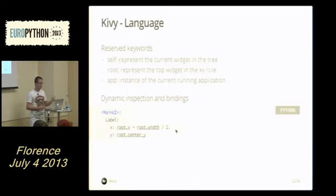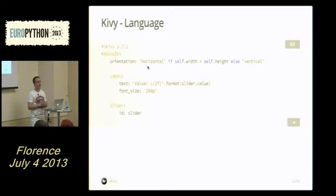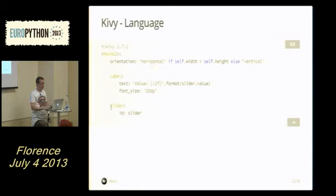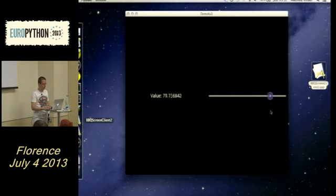We have optimizations: if you have no dynamic things in a rule it's static — we eval once and don't execute the expression again. A nice trick: you can change a layout's orientation depending on the ratio of your widget size. You can assign an ID within a rule — IDs are only usable within that rule. For example, using a slider ID in a label expression: moving the slider changes the label text on the fly.